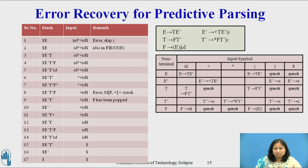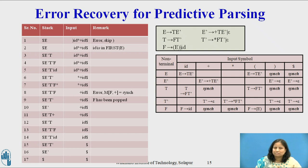On the erroneous input ')id*+id', the parser and the error recovery mechanism is shown in the table. In row 1, the first input symbol is right parenthesis, which is an error, so skip this symbol. In row 2, the input is id and the stack contains E; in the parsing table, entry M[E, id] is E derives T E-dash, so push E-dash then T onto the stack as shown in row 3. Continuing in this way, scanning input and checking the stack against the parsing table, we reach row 17, where the erroneous input is successfully accepted by the parser.